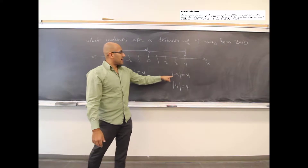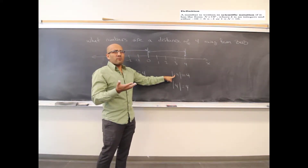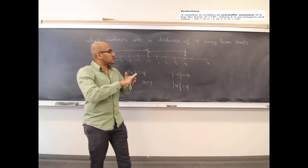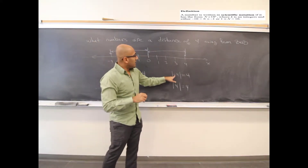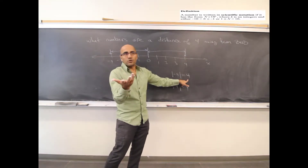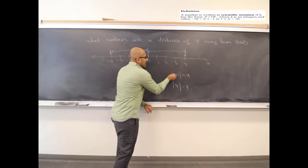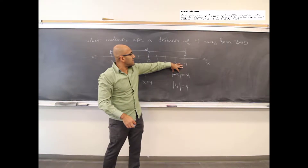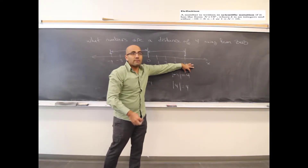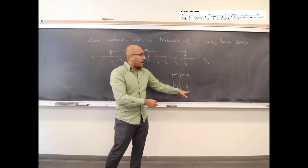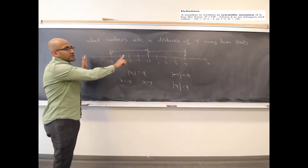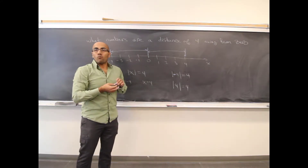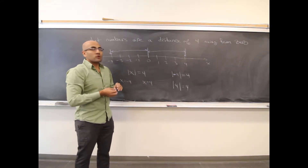Some people memorize absolute value as 'it takes away the negative,' but that's just memorizing a process without understanding what it really means. To really get this section, we need to go deeper. It's not just that it strips away the sign — although that is true. Really, this notation is asking for the distance that value is away from 0.